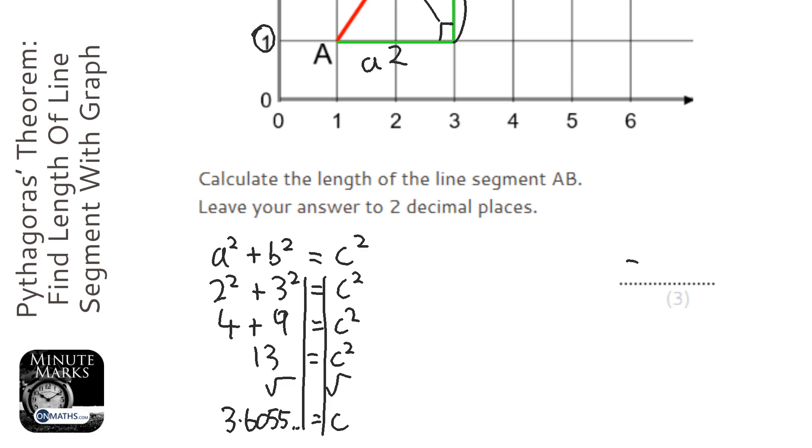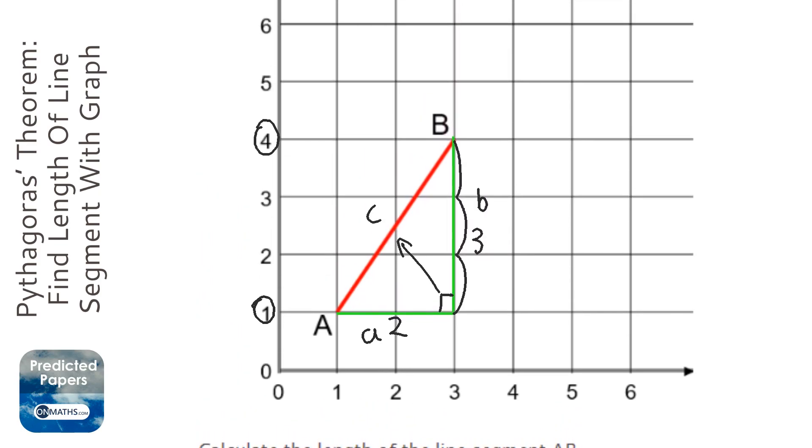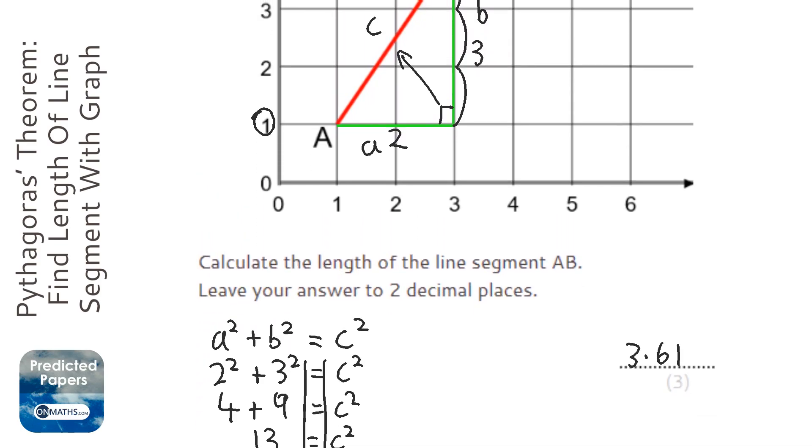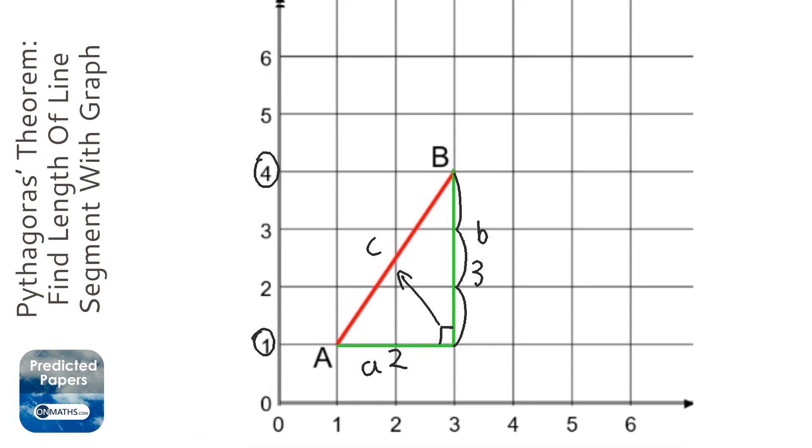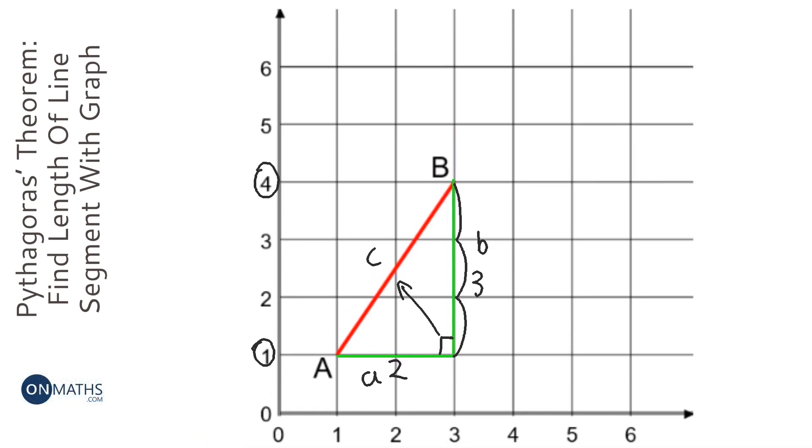So to two decimal places, it's three point six one. Now be careful, sometimes it will say that it's done on a centimetre square grid, so you might have units attached. If you want to put units but it doesn't say any, you can just write three point six one units.